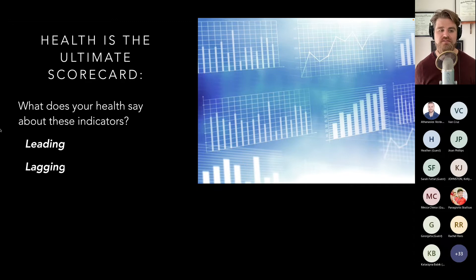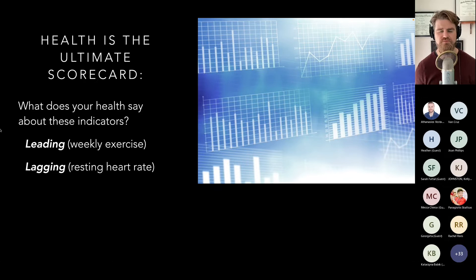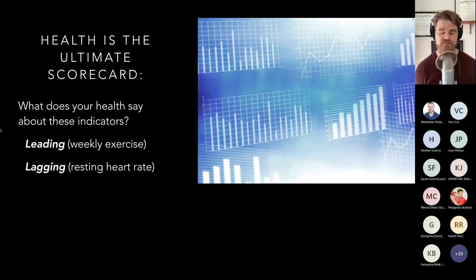In OBM terms, we have leading and lagging indicators. A leading indicator tells us our behavior is trending in the right direction — for example, weekly exercise. A lagging indicator is the result of all those behaviors — for instance, resting heart rate. If we exercise consistently with the right interventions in place, our resting heart rate may trend downward over time.